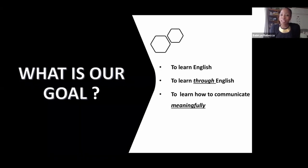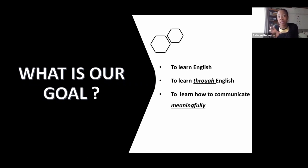So the question is, what is the goal of our classes? What are we trying to do in our Total English A and B classes? The big goal is to learn English, but even more than learning English, we want to learn through English. We want to learn about new cultures, new ideas, about people through English. We learn content through the English language.